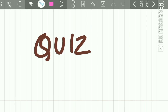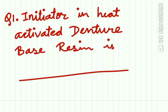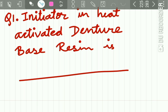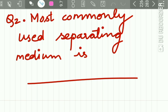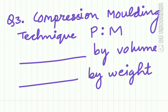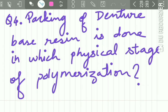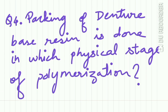Quiz time! Question 1: What is the initiator in heat activated denture base resin? Question 2: What is the most commonly used separating medium? Question 3: In the compression molding technique, what is the polymer-monomer ratio by volume and by weight? Question 4: Packing of denture base resin is done in which physical stage of polymerization?